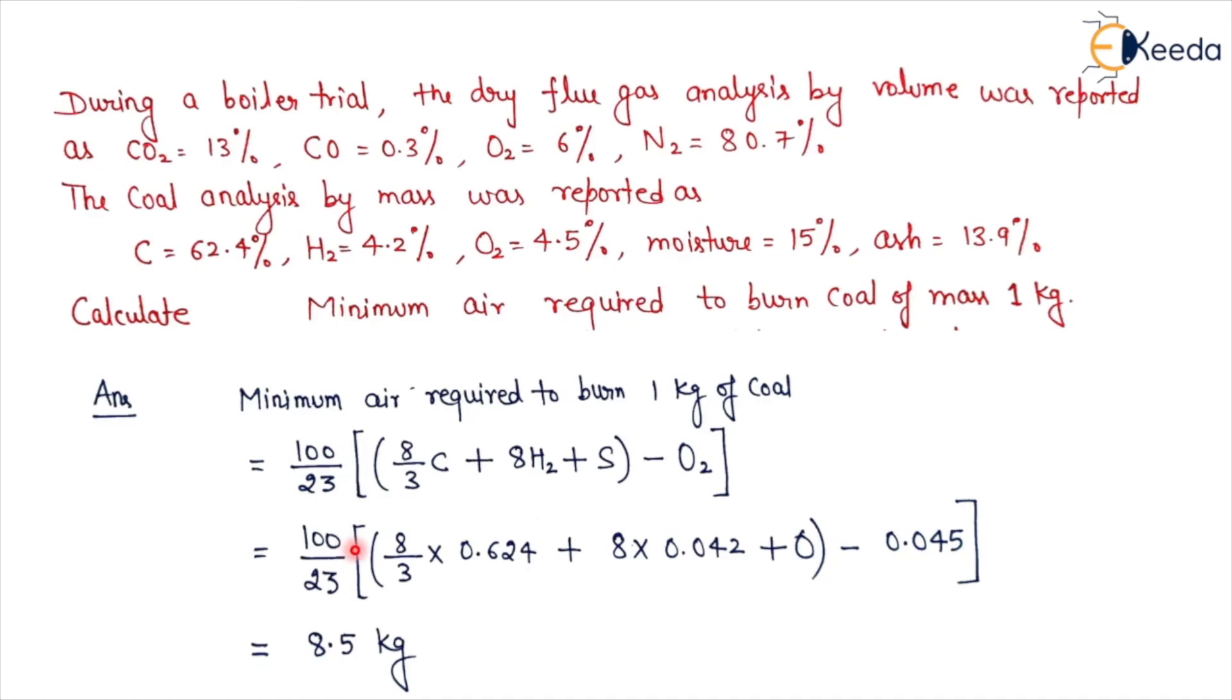You see here 100 by 23 into 8 by 3 times of carbon. Carbon is given 62.4%, so I can write 0.624 plus for hydrogen 8 into 0.042 plus sulfur. Sulfur is not there, so we will take zero minus oxygen. What is oxygen given? That is 4.5%, that means 0.045. If I solve this equation, I will get 8.5 kg.